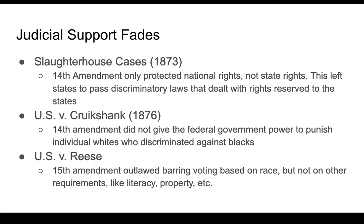What you see happen in the South during the Jim Crow era following Reconstruction are things like — they didn't say black people cannot vote, but they said people who don't pass a literacy test, people who don't own property, or people whose grandfathers did not vote could not vote. This Grandfather Clause and these requirements, without actually saying it explicitly, ended up disenfranchising essentially almost every black person in the South from voting.